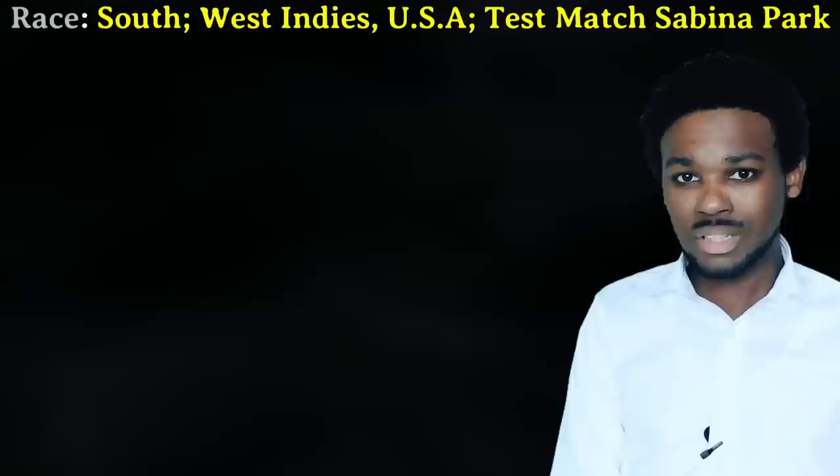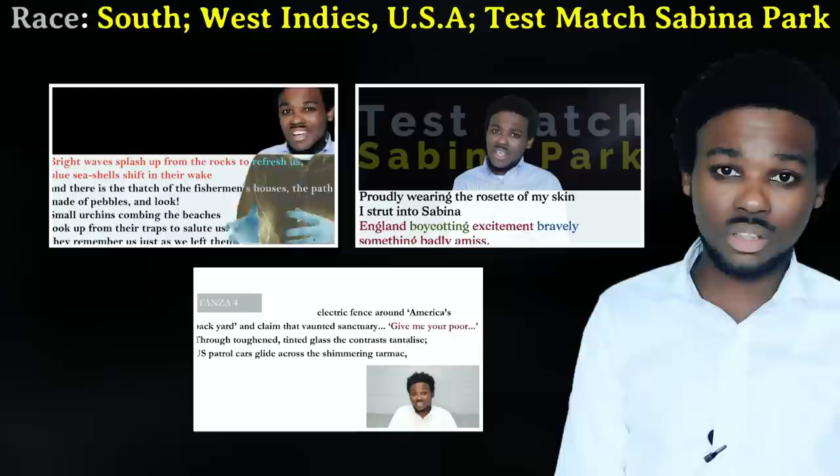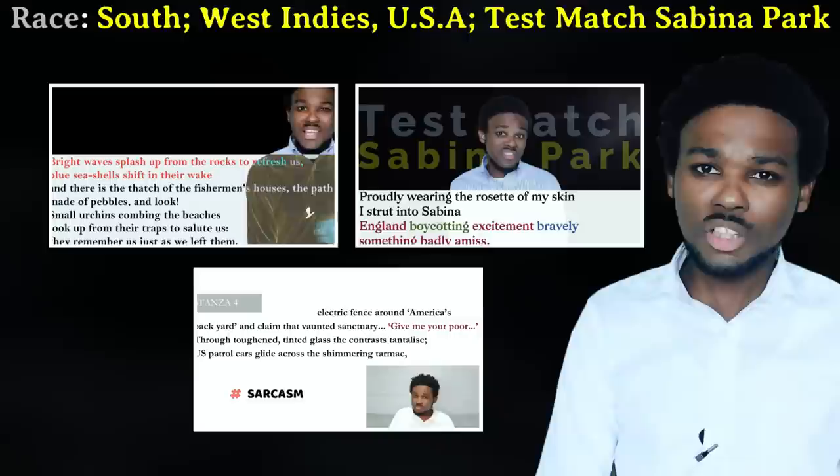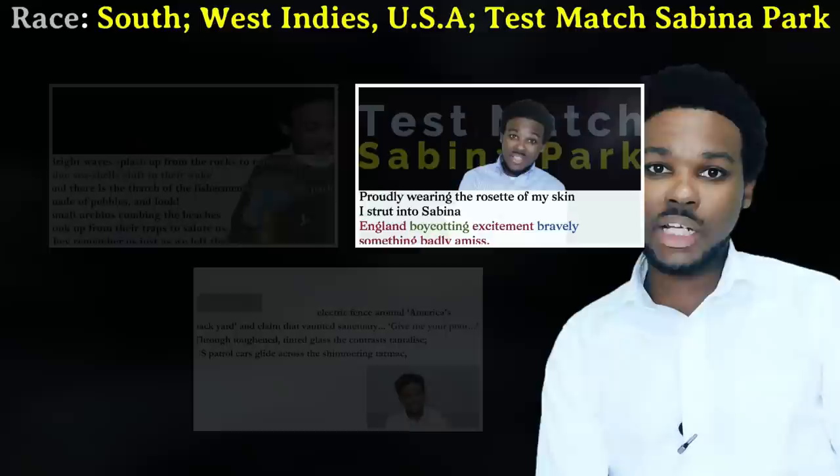Theme 5: Race. The poems are Test Match Sabina Park, West Indies USA, South, Theme for English B, and Dreaming Black Boy. In South, West Indies USA, and Test Match Sabina Park, we see that black people are treated unfairly or looked down on because of their race. We tackle racism and race relations in these poems. Not everything that happens in the poems relates to racism, which is why the term 'race relations' is used. Watch the lessons on these poems to understand what I'm saying.